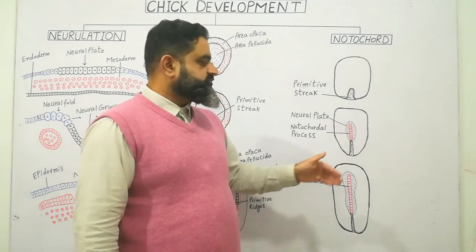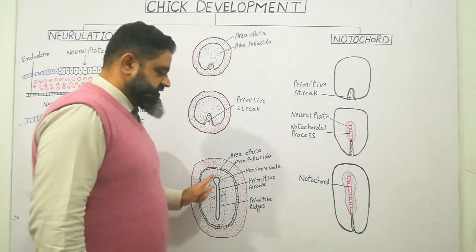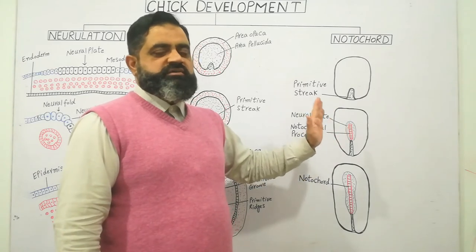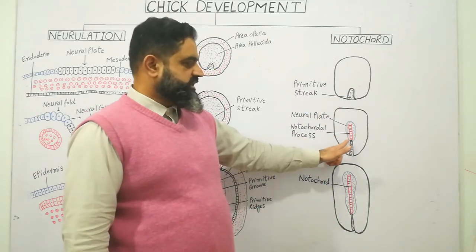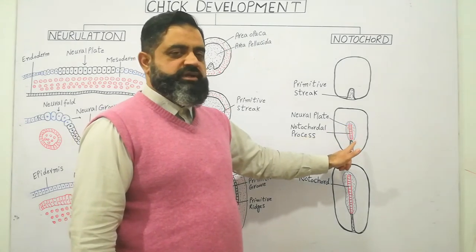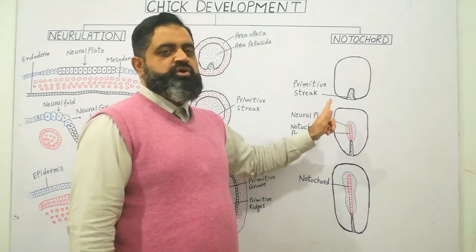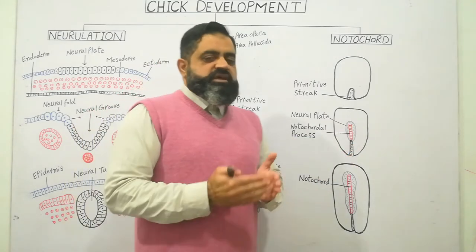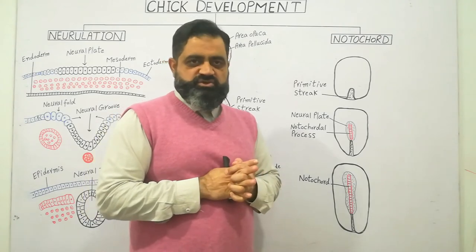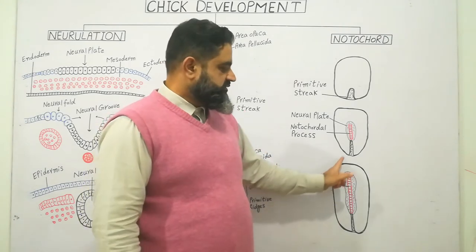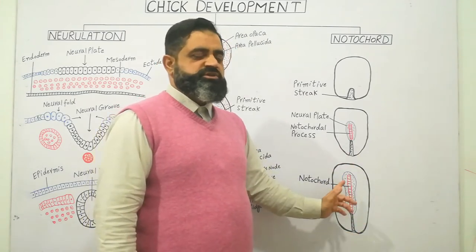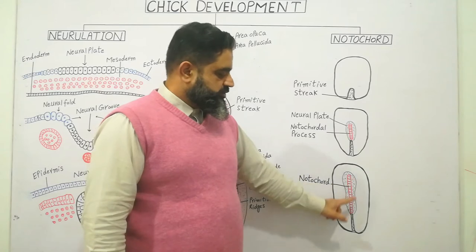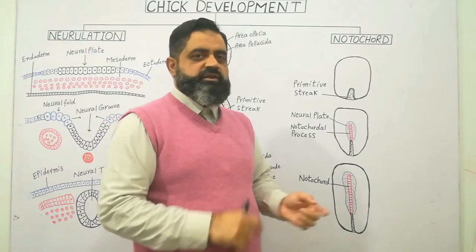As development proceeds, the primitive streak moves towards the anterior end, and the cells migrating from Hensen's node are going to form a rod-like structure in the center of the embryo — in the central axis, just beneath the epiblast. This red color in the diagram represents the notochordal process, which takes place from anterior to posterior end. As cells keep migrating through Hensen's node, formation of notochord continues. The shape of the embryo has changed from round to pear-shaped, and the notochord has been formed from anterior to posterior end while the primitive streak is reducing in length.